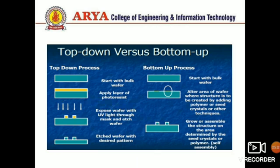Now, bottom-up versus top-down. In the top-down process: first, start with a bulk wafer; then apply a layer of photoresist; then expose the wafer with ultraviolet light through a mask and etch the wafer; and finally, etch the wafer with desired patterns.